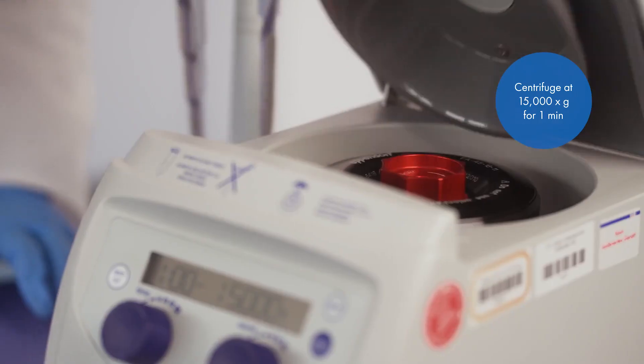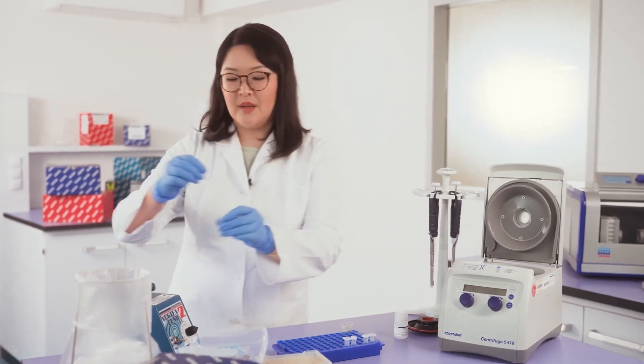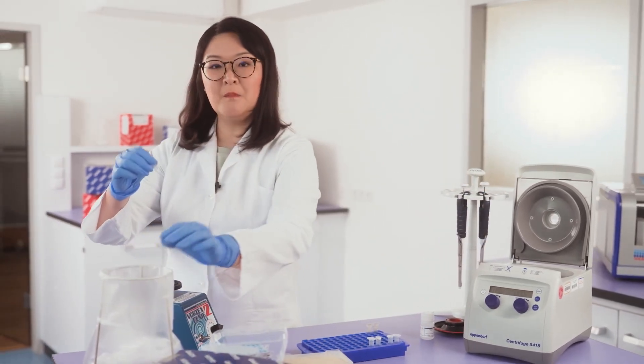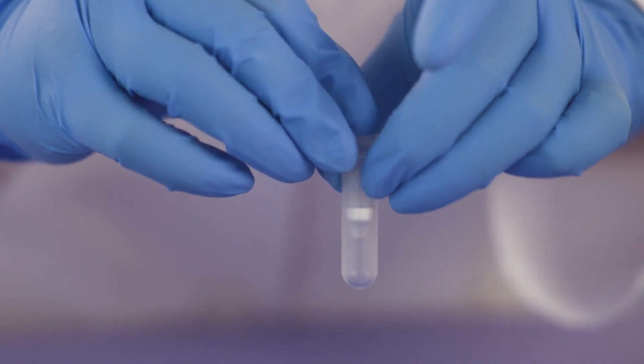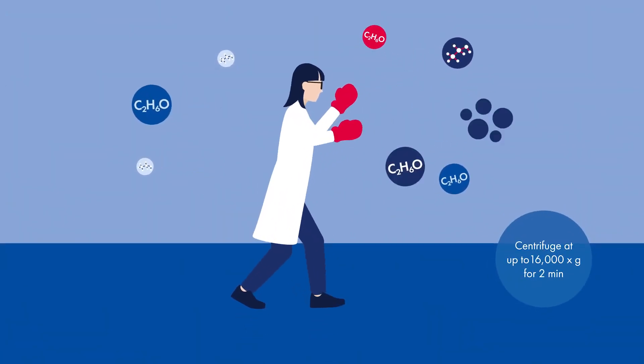Now add solution C5 to further purify your DNA. Then repeat the washing step. Discard the flow-through and place the MB spin column onto a new tube. Make sure solution C5 is thoroughly removed, as ethanol interferes with DNA downstream applications.